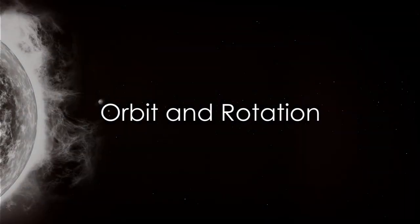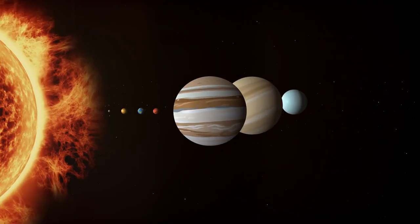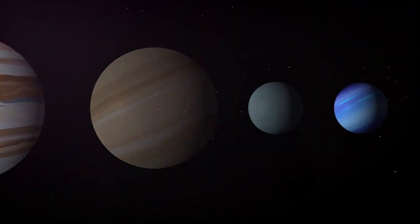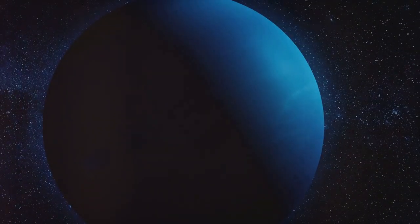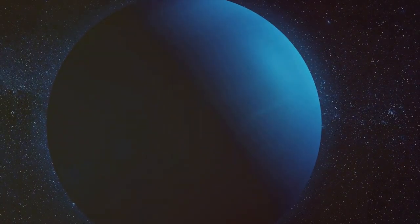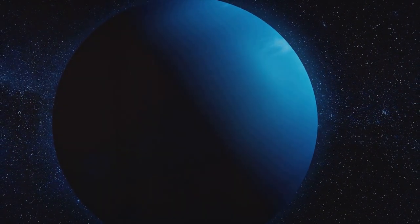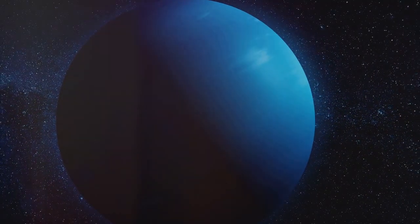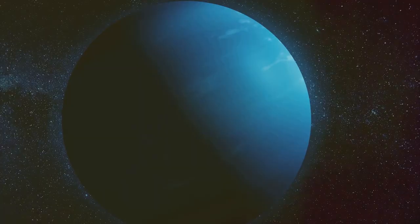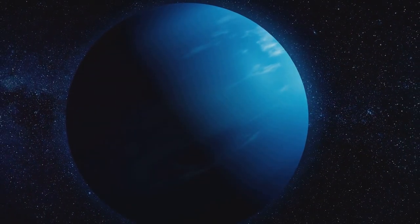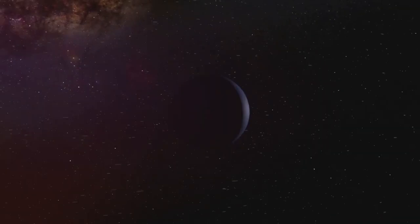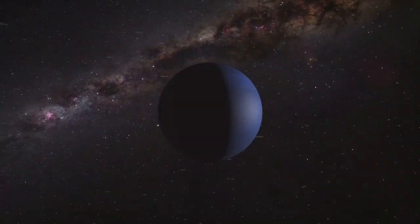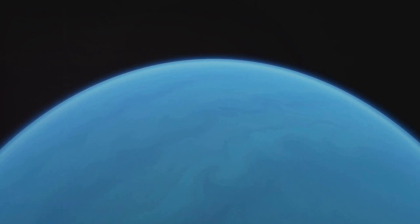A year on Neptune is unlike any year on Earth. Imagine celebrating your birthday just once every 165 years. Yes, that's how long it takes Neptune to complete one orbit around the Sun. This extraordinarily lengthy journey is due to Neptune's tremendous distance from the Sun, about 30 times further than Earth is. Now imagine if each season—spring, summer, autumn, and winter—lasted for over 40 years. That's right, four decades of summer sun or winter snow. This unusual duration of seasons is due to Neptune's axis of rotation, which is tilted by a significant angle compared to its orbit.